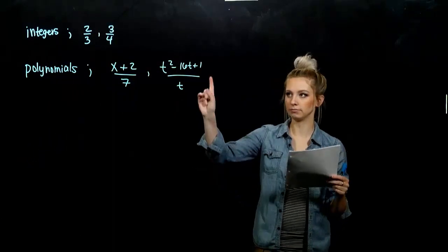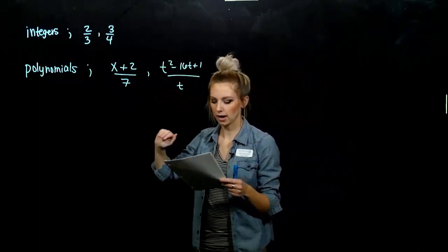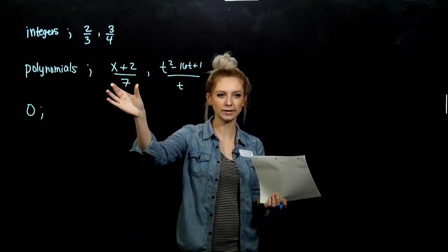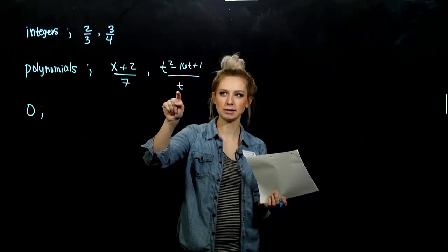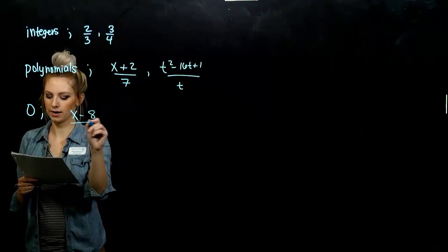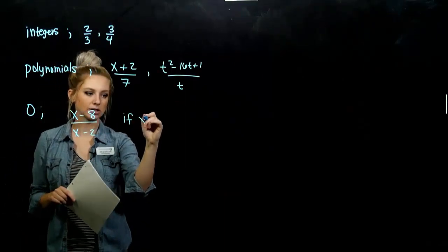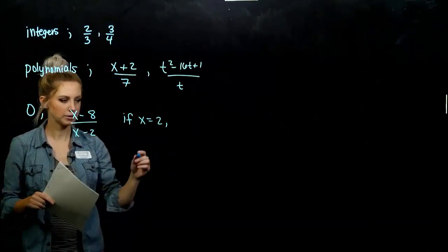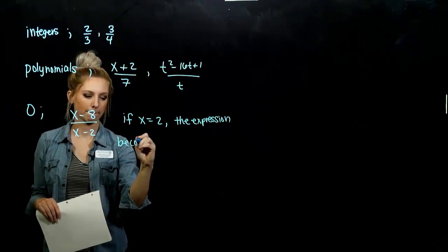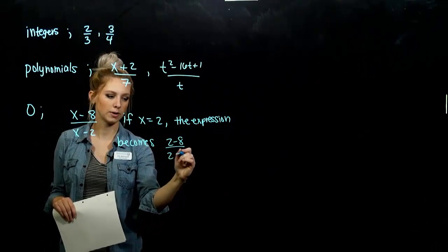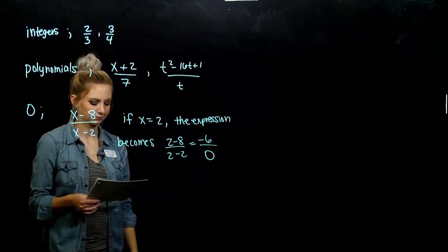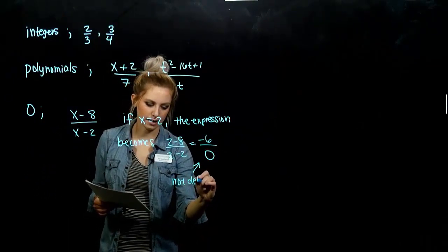A rational expression indicates division, obviously, since we have fractions. So we have to be careful to avoid dividing by zero, because if we do, things explode. In our first example, we were only ever dividing by seven, so that's fine. But if I plug in zero for t, this thing is going to have issues and not be defined. So for x minus 8 over x minus 2, if x is actually equal to 2, the expression becomes 2 minus 8 over 2 minus 2. We get a negative number up top — that's fine — but down below I have zero, which isn't defined. We can never divide by zero.